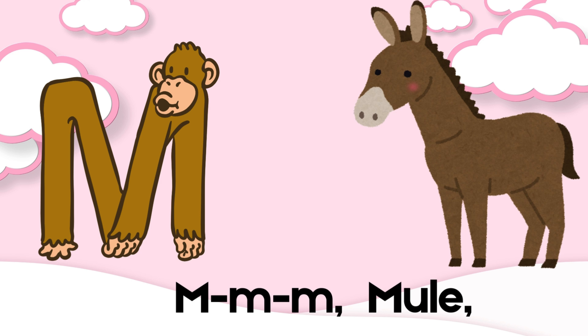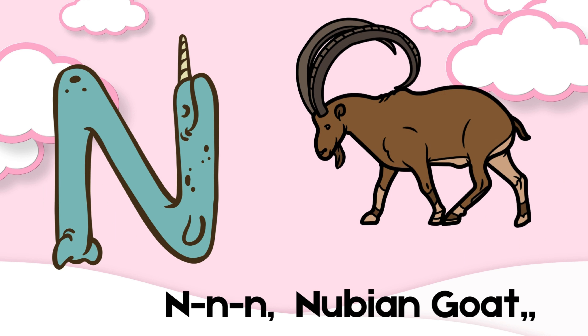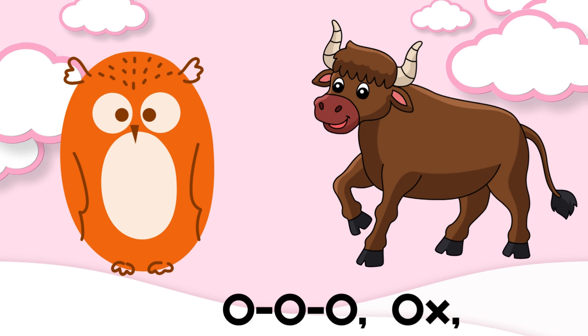M is for mule, N-N-N-N. N is for newt, O-O-O. O is for ox, P-P-P-P. P is for pig.